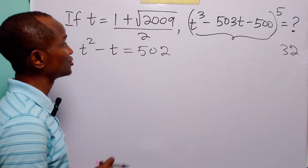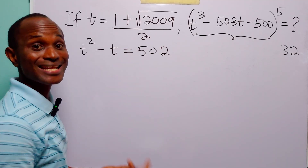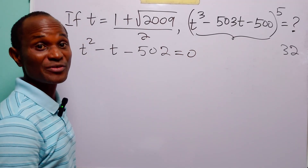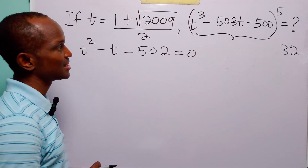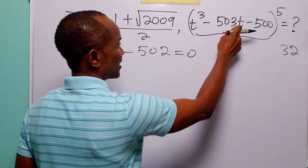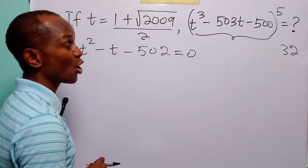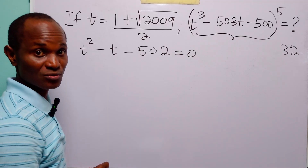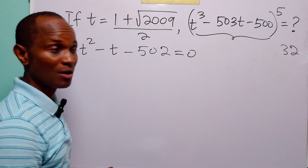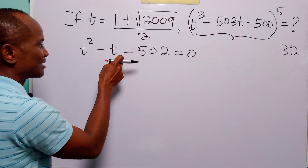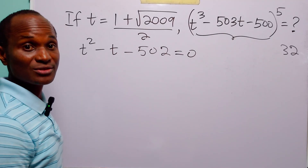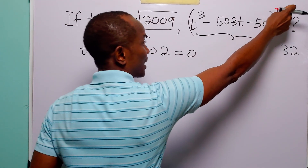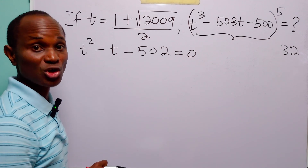Now for the second method, we are still going to need this written in this form, but with slight changes. We are going to make use of the remainder theorem — the theorem that says the value of this polynomial, that is t³ − 503t − 500, when t = (1 + √2009)/2, is the same as the remainder when this polynomial is divided by t² − t − 502. So we will divide and find the remainder, then raise that remainder to the power of 5, using the long division method.